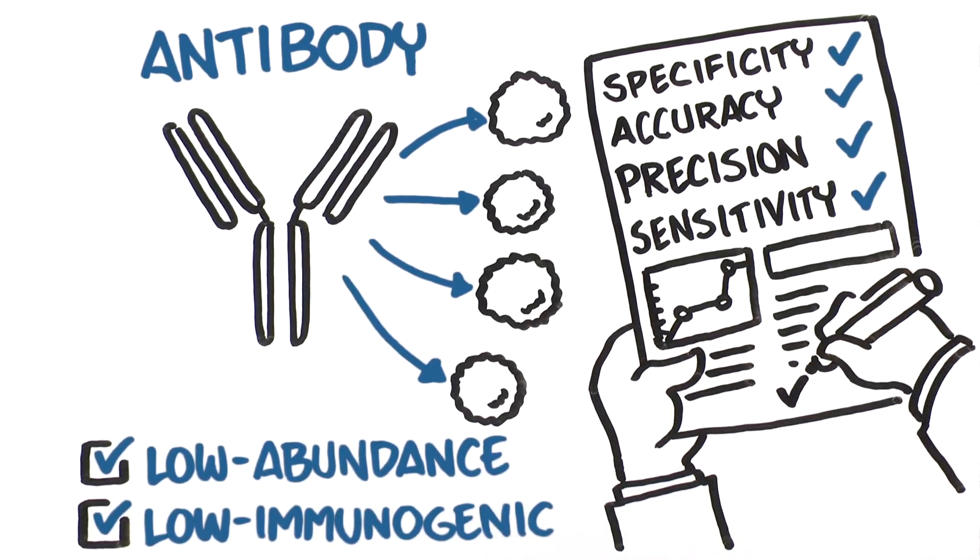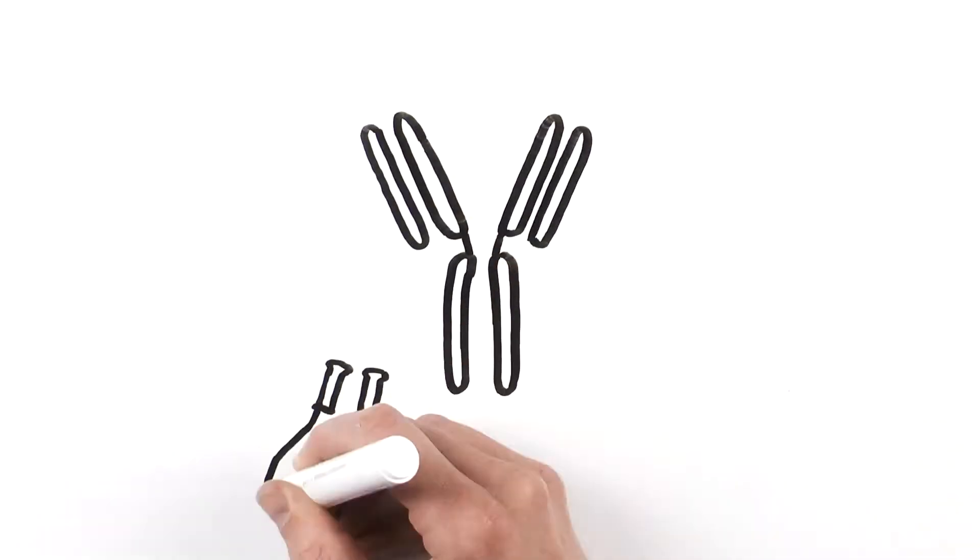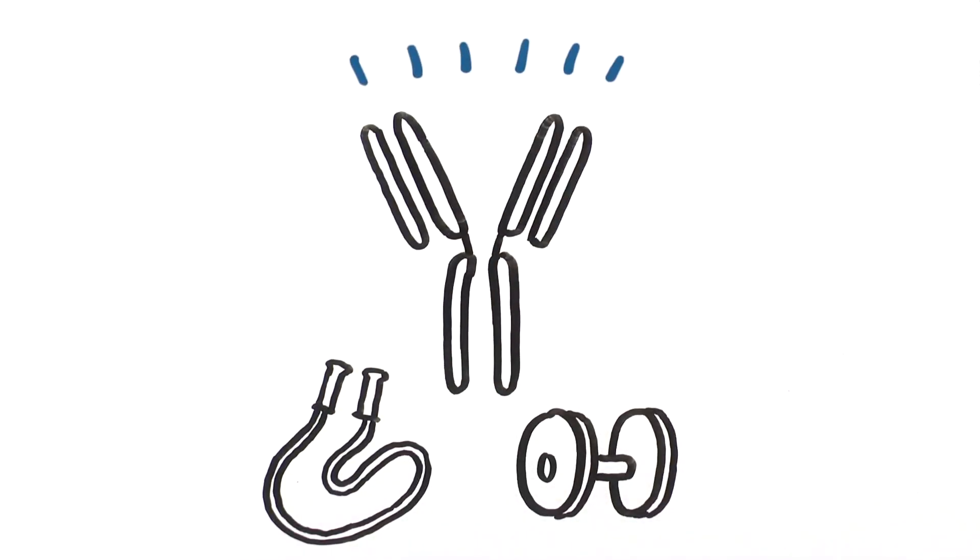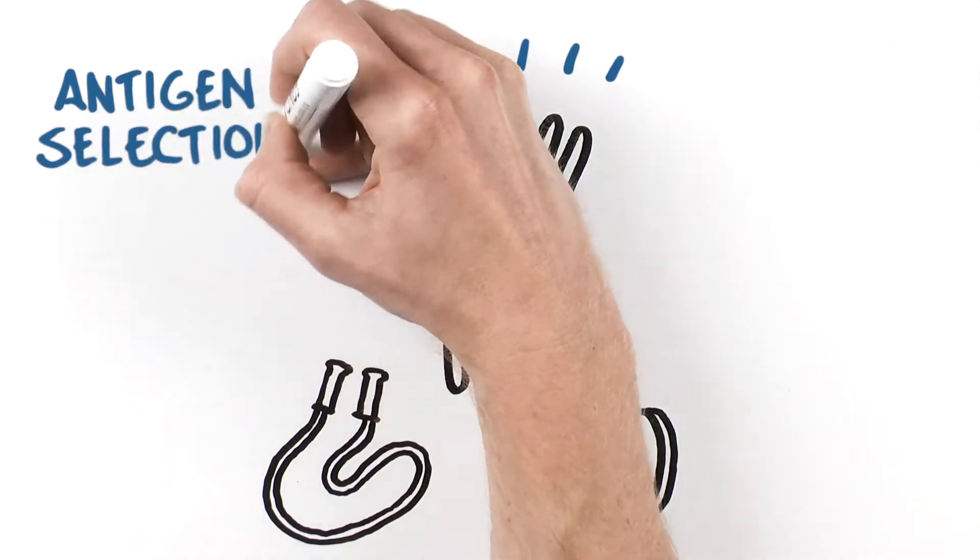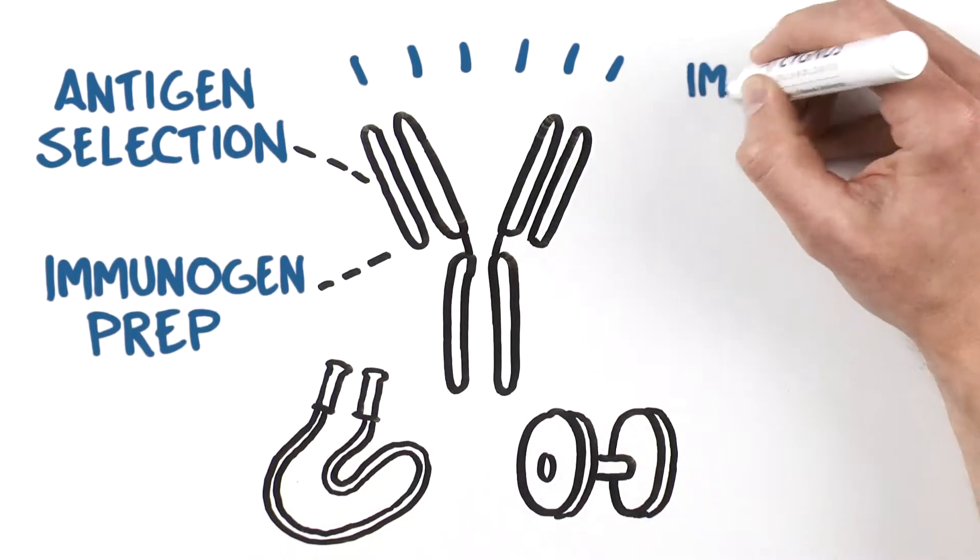The first step is antibody development. Critical factors to consider include antigen selection, immunogen prep, immunization methods, and antibody affinity purification.